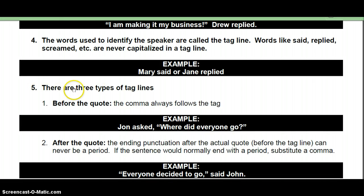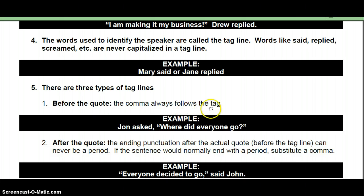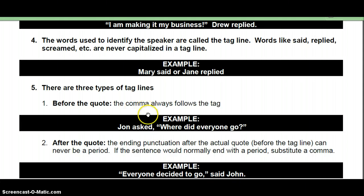Moving down to number five, there are basically three types of taglines. If your tagline comes before your quote, then a comma should always follow the tag. So "John asked" is our tagline — there's a comma, and then "where did everyone go?" with a question mark. Notice how the comma came right after the tag, but before the quotation marks.